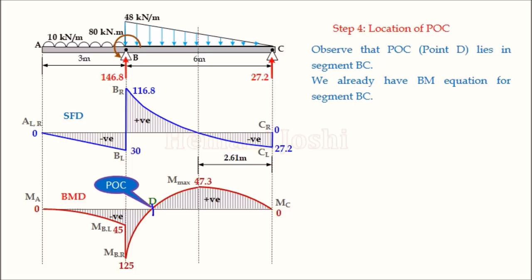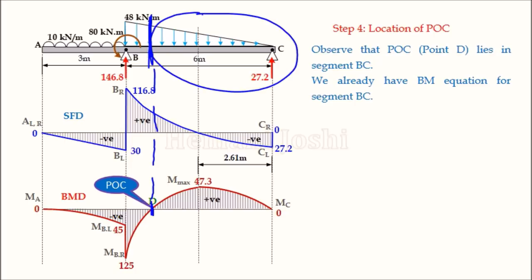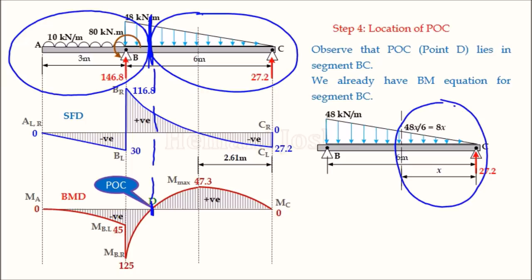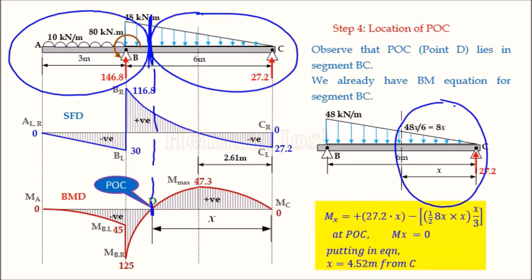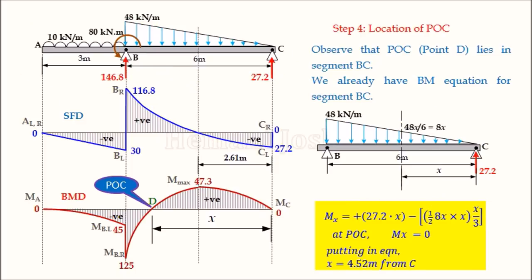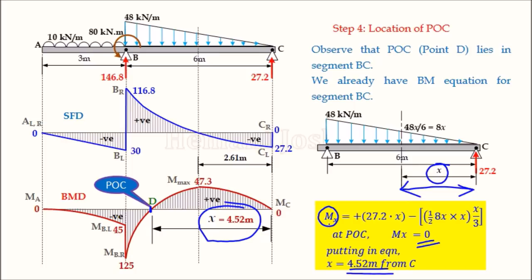To locate the point of contraflexure, we take a section in segment BC and set the bending moment equation equal to zero. We already have the bending moment equation for segment BC from the right FBD. Equating that equation to zero and solving for X gives X = 4.52 m from C — this is the location of the point of contraflexure. This completes the fourth step: plotting the POC on the shear force and bending moment diagrams.